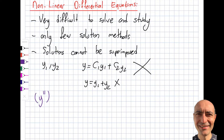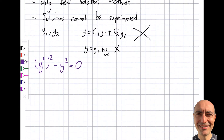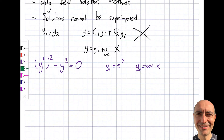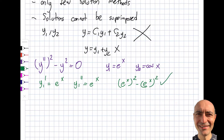Let's illustrate my point with a simple nonlinear equation. Why is this nonlinear? Because of the y'' squared term. I'll give you the solution: y1 = e^x. To verify, y1' = e^x and y1'' = e^x. Plugging in, you get e^x squared minus e^x squared, which equals zero. So y1 is indeed a solution.